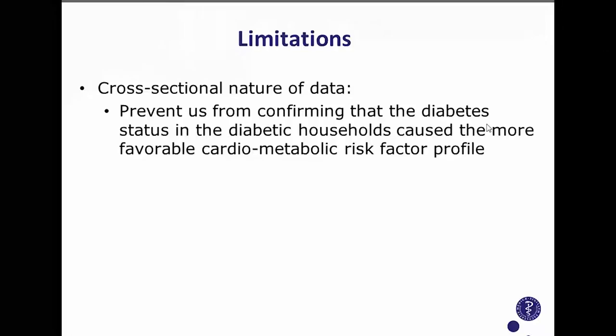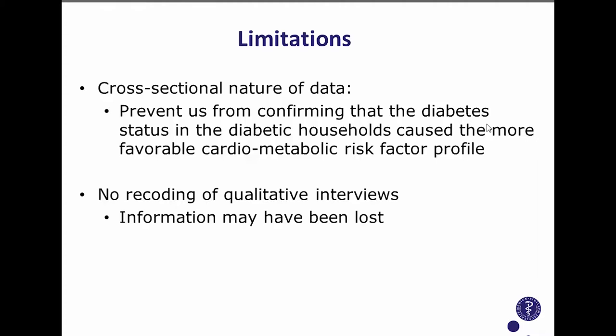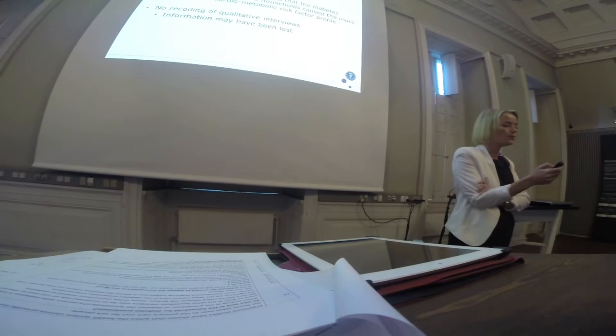There are important limitations deserving comment. Some are methodological and some relate to how households and patients differed from each other. All data is cross-sectional, so we cannot establish causality — only associations — because we don't know the status of risk factor profiles in these families before the person with type 2 diabetes received their diagnosis. Also, qualitative interviews were not recorded but transcribed during the interview, which may have caused some loss of information.